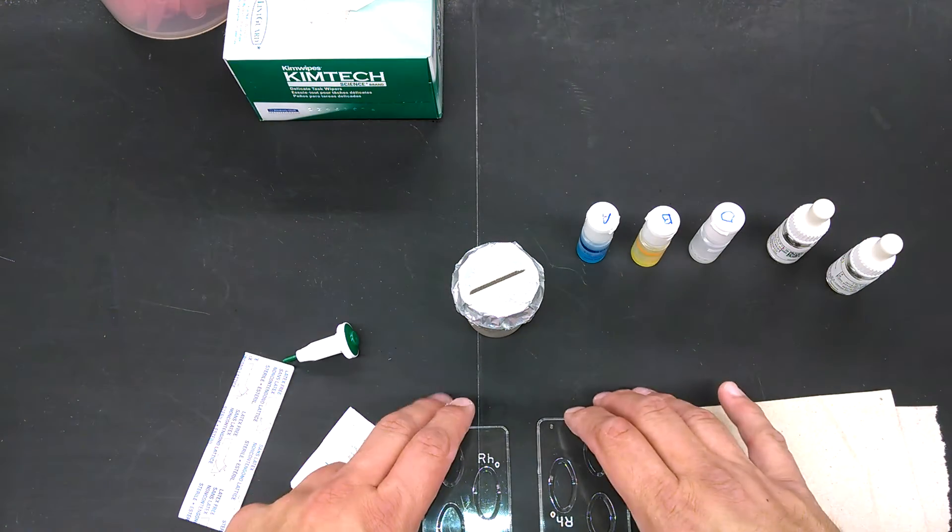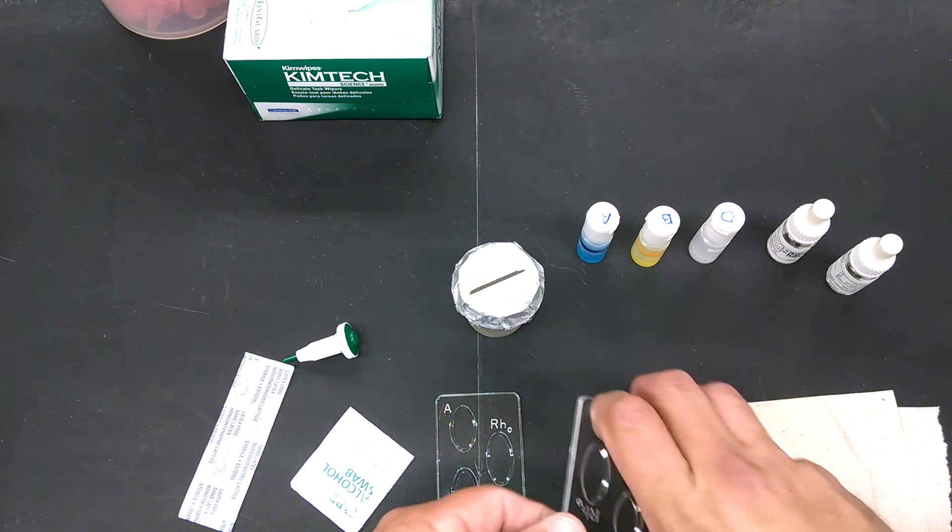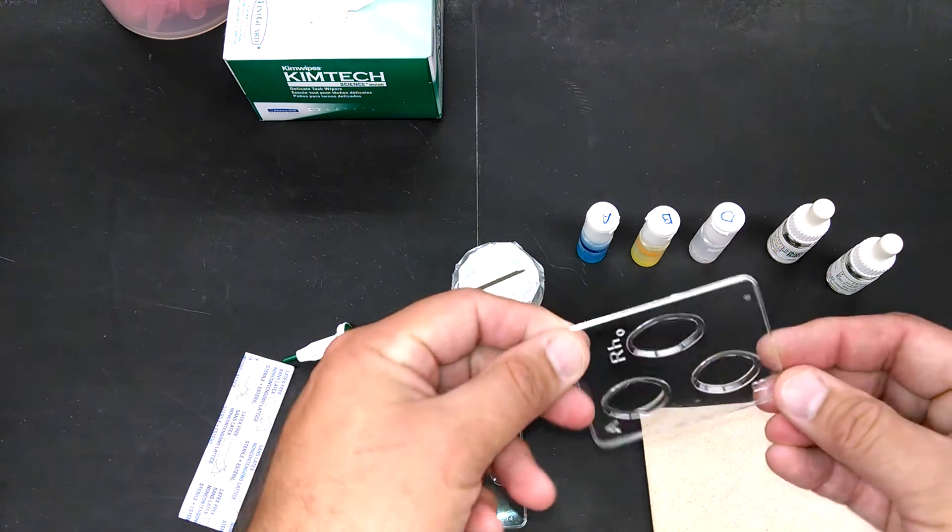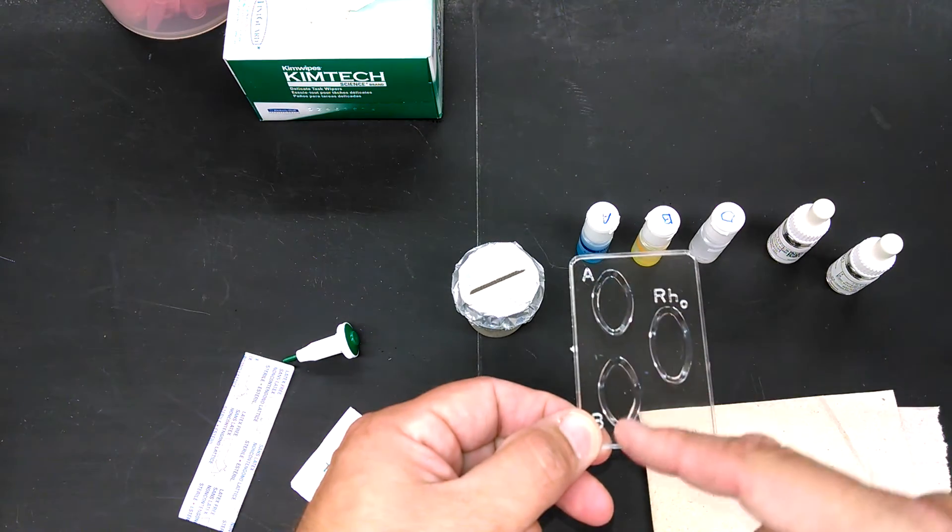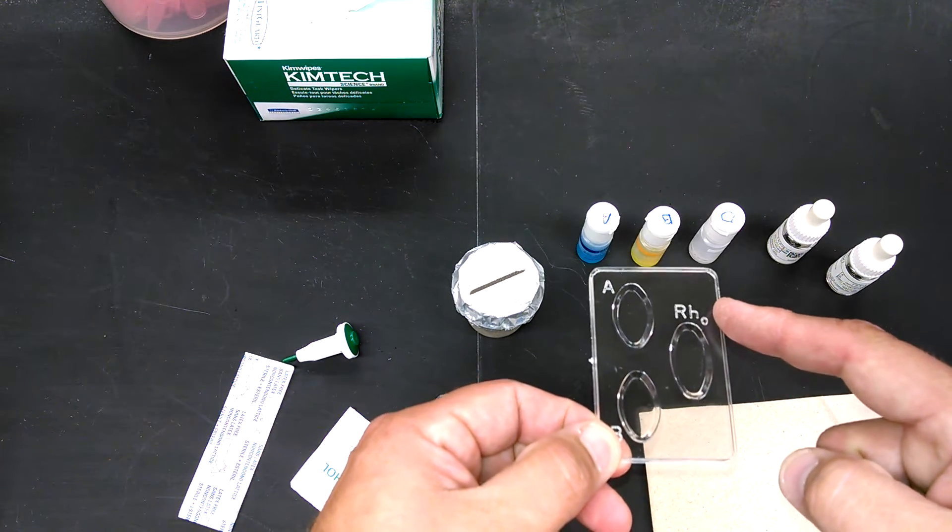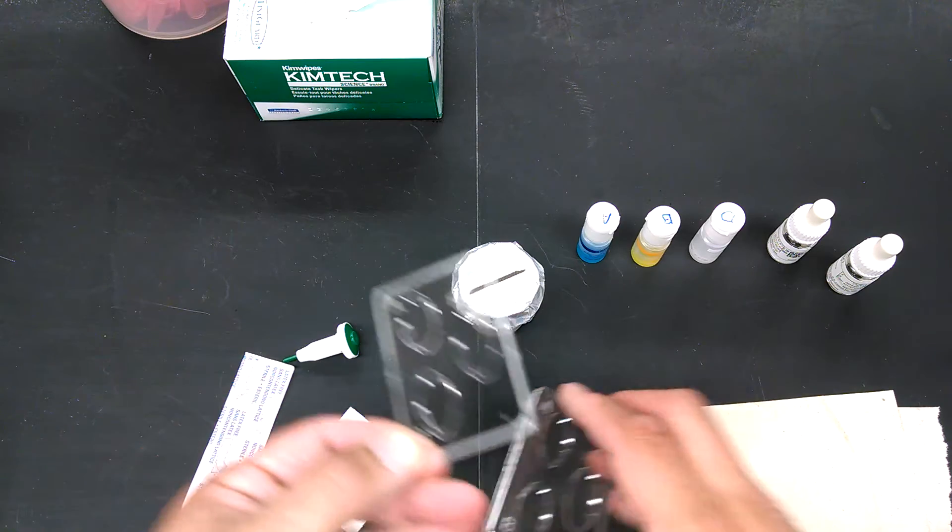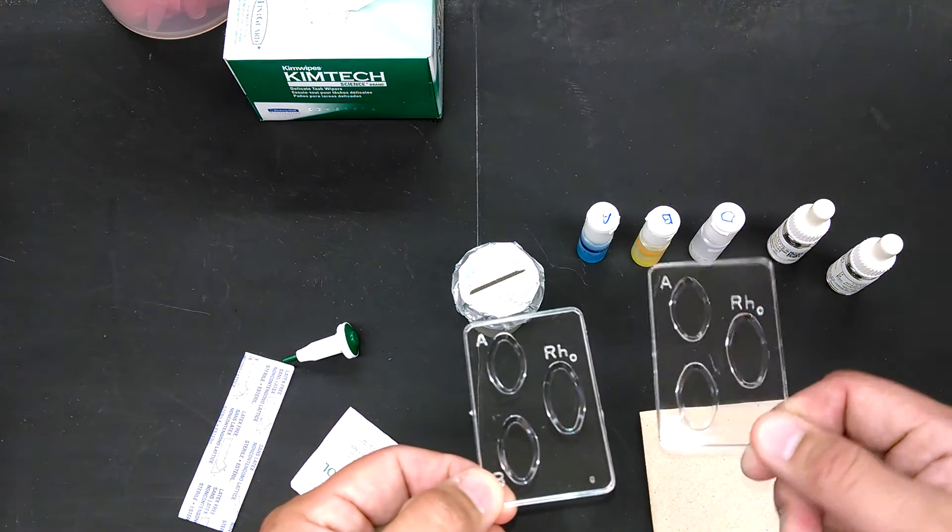We have some fancy kind of well trays, and they're already labeled A, B, and RH. So that's D. But there aren't any that exist that are already labeled M and N.